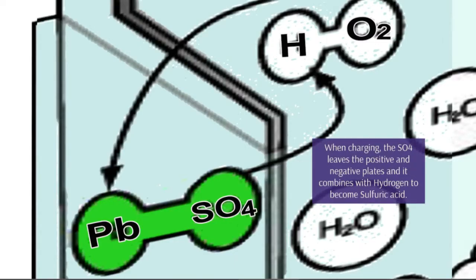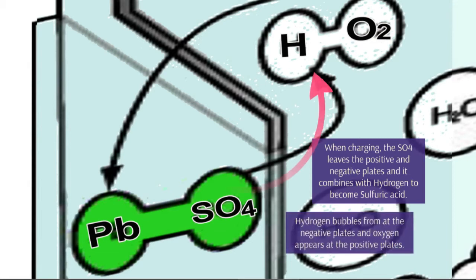When charging, the SO4 leaves the positive and negative plates and combines with hydrogen to become sulfuric acid. Hydrogen bubbles form at the negative plates, and oxygen appears at the positive plates.